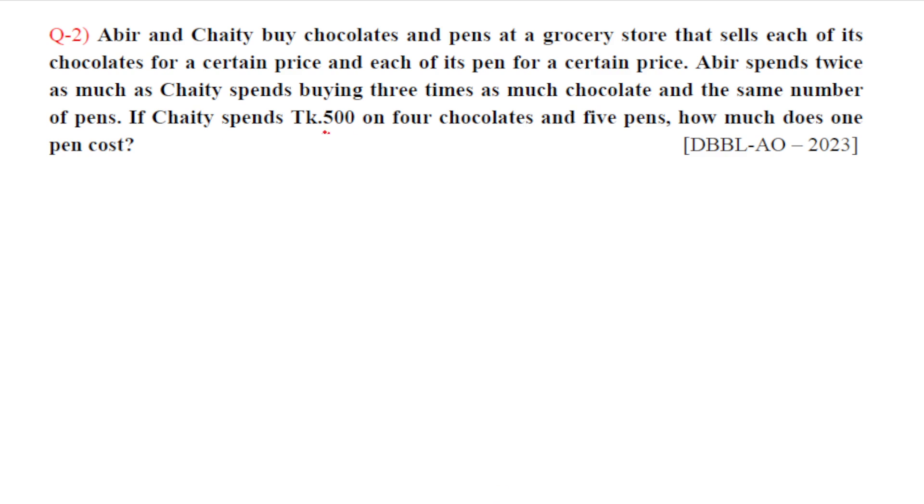Chaity spends on 4 chocolates and 5 pens, so 4C plus 5P equals 500. Abir spends twice as much, which is 1000. Abir buys three times as much chocolate, so 3 times 4 is 12 chocolates, and the same number of pens, which is 5. So 12C plus 5P equals 1000.